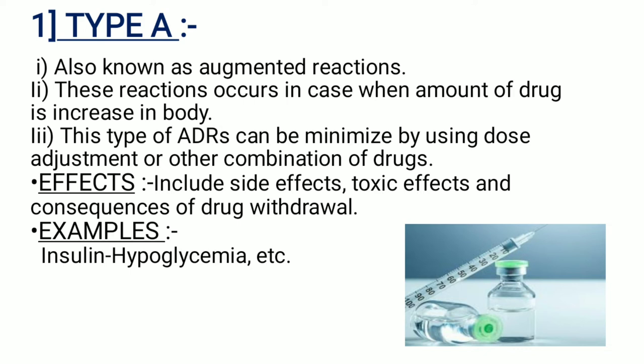Type A is also known as an augmented reaction. This reaction occurs when the amount of drug is increased in the body. This type of ADR can be minimized by dose adjustment or other combination of drugs. It includes side effects, toxic effects, and consequences of drug withdrawal. For example, insulin causing hypoglycemia.